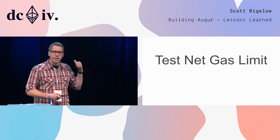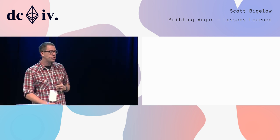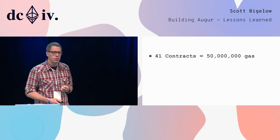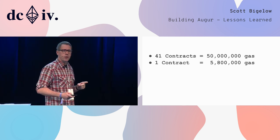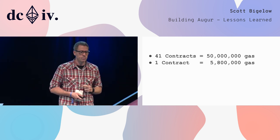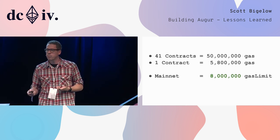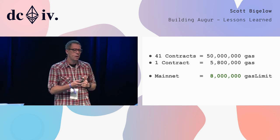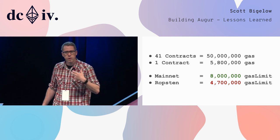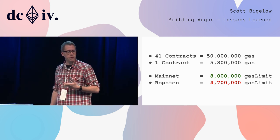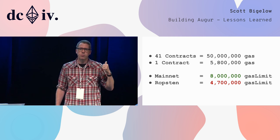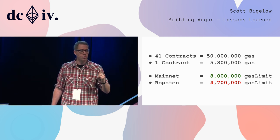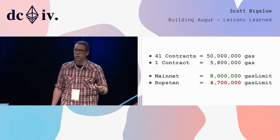One of the issues we ran into was a testnet gas limit issue. We have 41 contracts that take 50 million gas to deploy total, but one of these contracts — the largest — takes 5.8 million gas. That isn't a problem for mainnet, which has a block gas limit of 8 million. However, Ropsten, one of our main test networks at the time, had a block gas limit of 4.7 million. It could not contain that one transaction to deploy the largest contract, which was critical for our system.